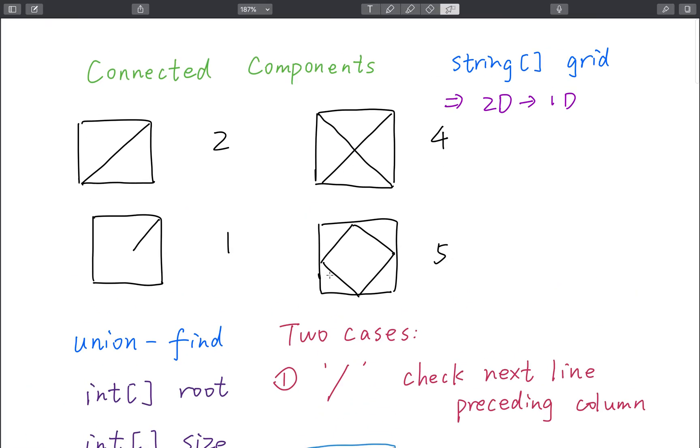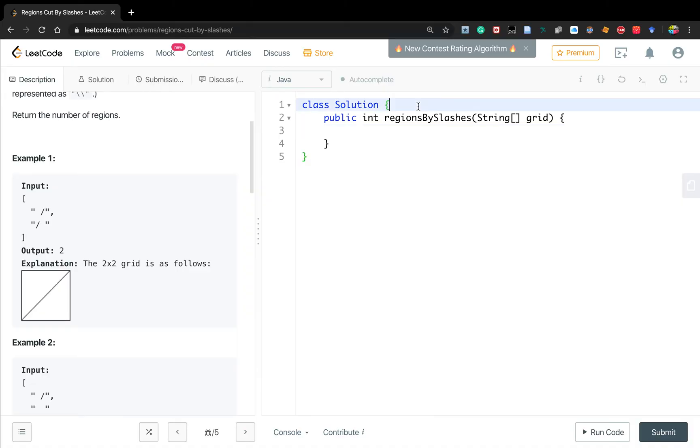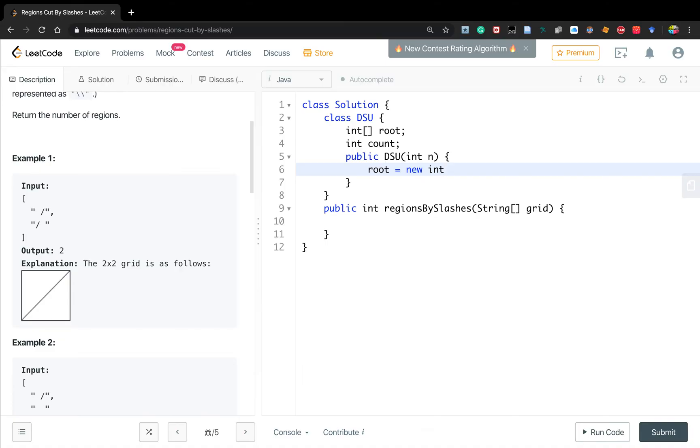Let's write the code. We first need to write the disjoint set. In this case we need the root, but we do not need the size because we don't need to sort by their rank. This is the count, which means the number of the connected components. This is the constructor, so the root will be n plus one times n plus one. The count at first will equal to one.